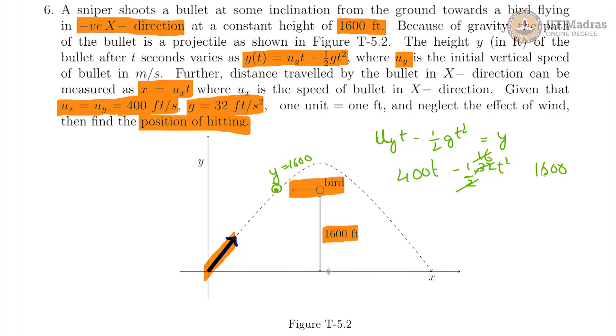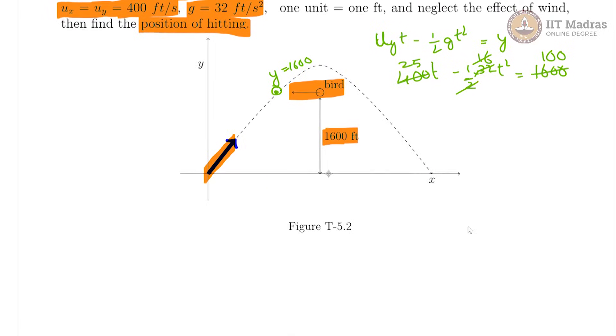Now, you can cancel off 16 here with this, so this becomes 100 and this becomes 25. We get a quadratic equation which is t squared minus 25t plus 100 equals 0.